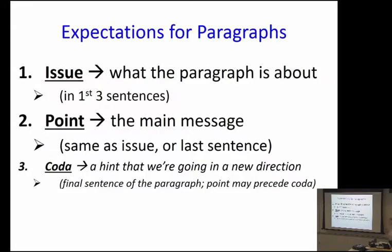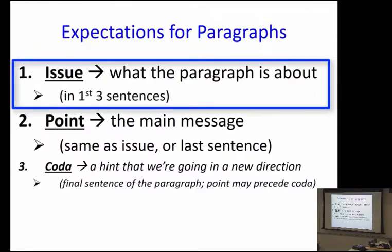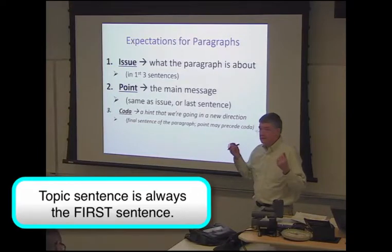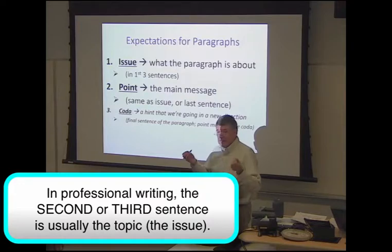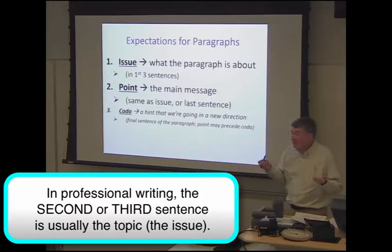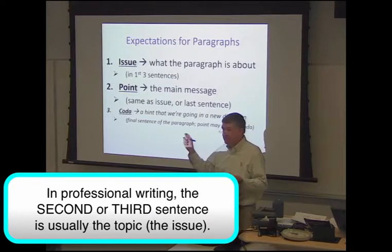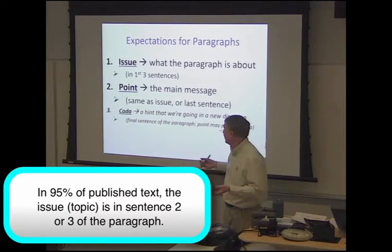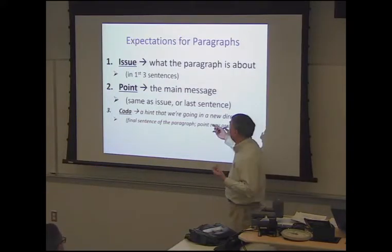What we're talking about today is expectations for paragraphs. The issue is what the paragraph is about. The difference between the topic sentence paragraph structure we all learned in high school and Gopin is that Gopin says, when he looks through published papers, maybe 5% actually have the first sentence as the topic. The other 95% do something different. Almost all professionally written, published prose that people would generally acknowledge as good writing does something different.